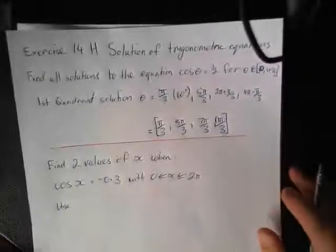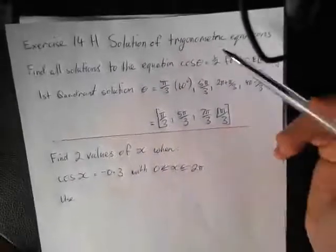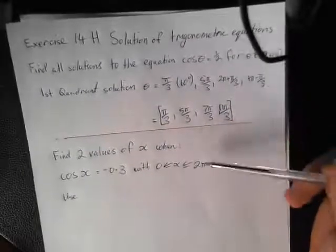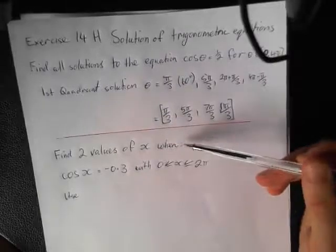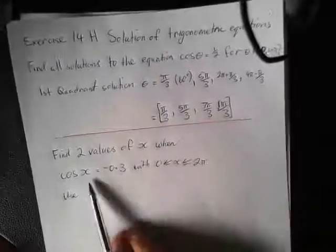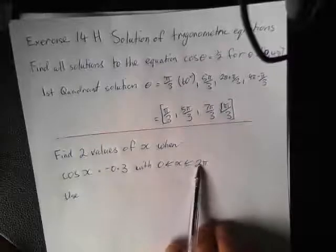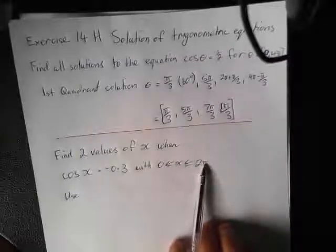There's a break in the video there. So, I've just gone through this one. I'm going to go through here. So, we're finding solutions of trig equations. Find two values of x when cos x equals negative 0.3 with x being between 0 and 2 pi. That's in one circle.